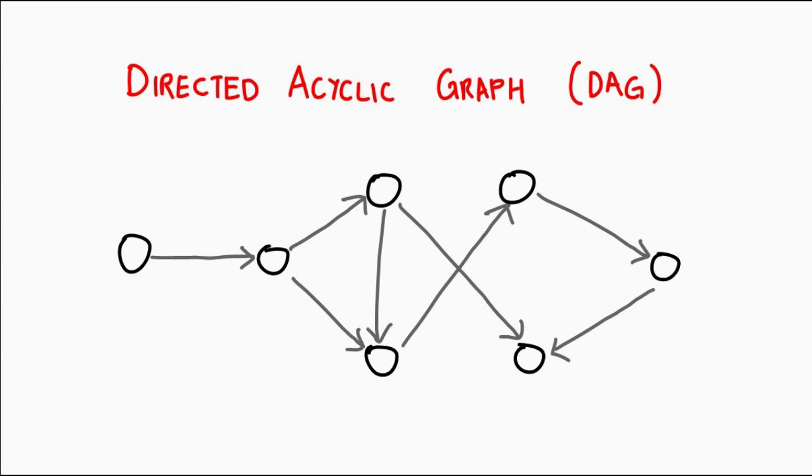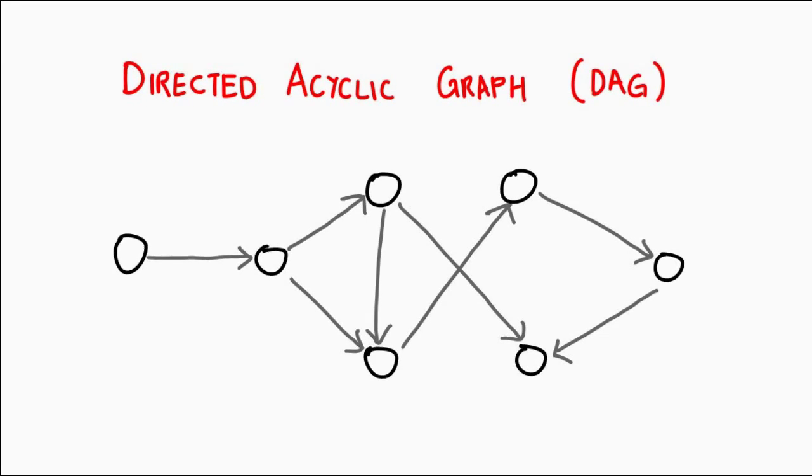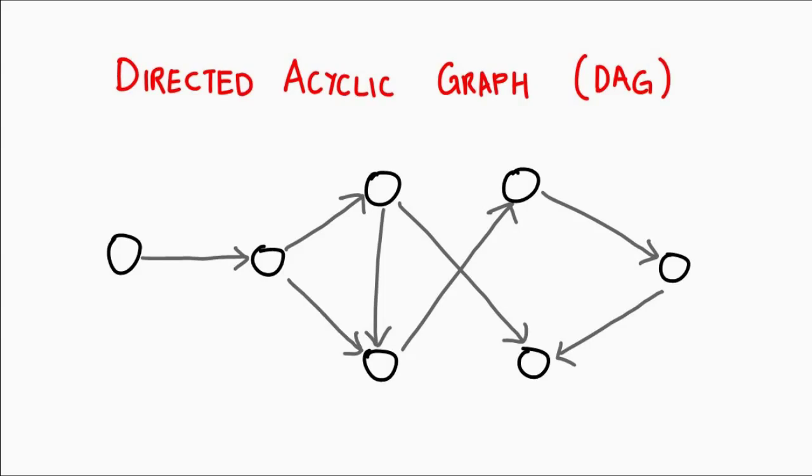This one is important. If we put together two of the constraints we've just seen, what we get is a directed acyclic graph, also known as a DAG. DAGs are actually pretty useful — some of the algorithms we'll see only work on DAGs. If you have an algorithm that traverses a graph and you already know there are no cycles, you won't have to worry about getting into an infinite loop by following a cycle repeatedly.